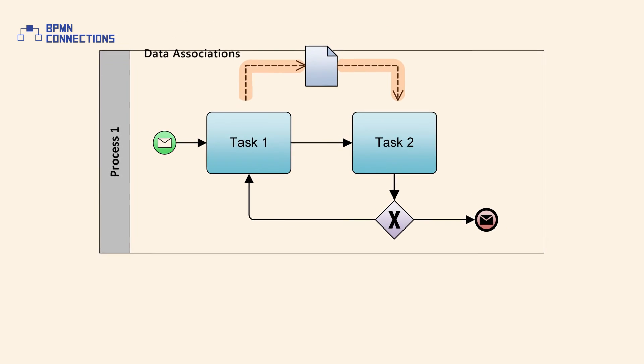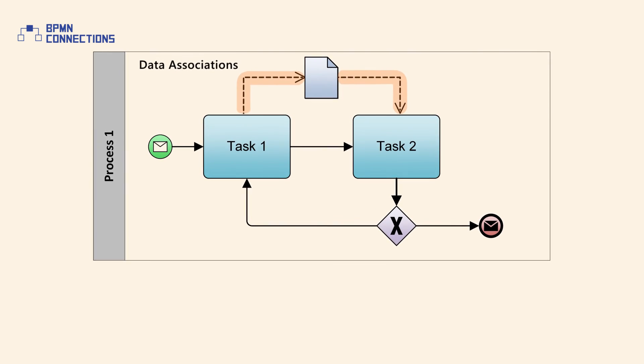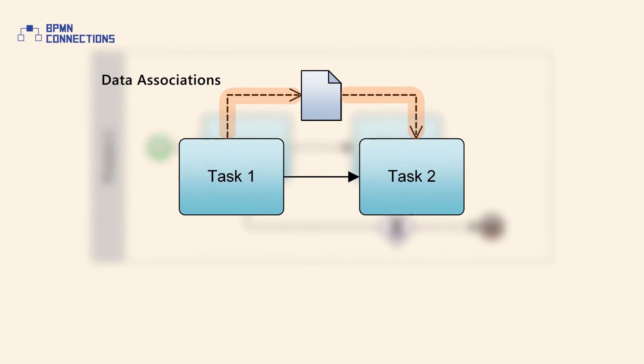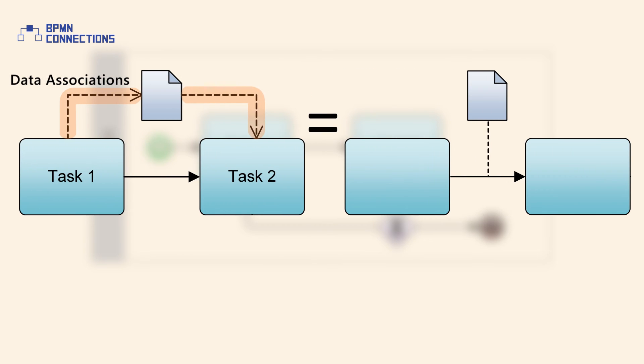Data associations are used to show the flow of information between data objects, stores, inputs, and outputs. Data associations are directed dotted lines which define the order of data flow. Data objects may also be directly associated with a sequence flow to represent the same input/output relationships.